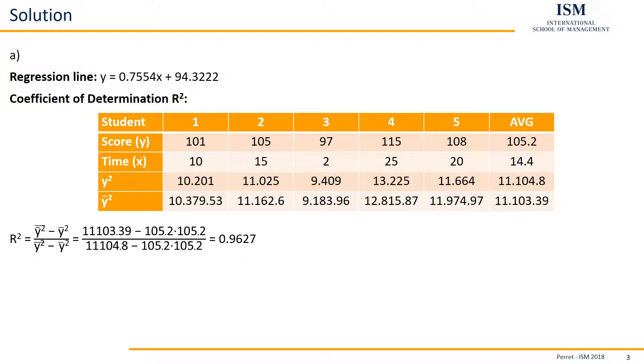Because the R squared is given as the average of Y hat squared, so here it's the 11,103.39 minus the average of Y squared, which is 105.2 squared. All of this is divided by Y squared, thereof the average. So here the 11,104.8 minus again the average of Y being squared, so again 105.2 squared. If we enter this into the calculator, we get here an R squared of 0.9627.